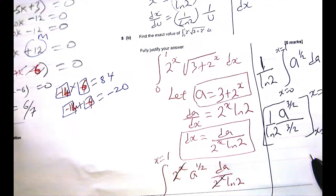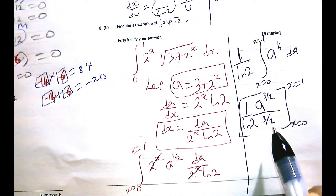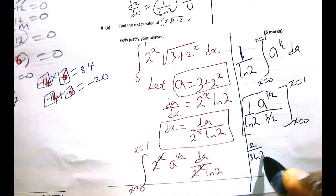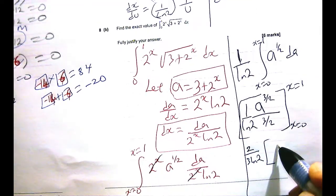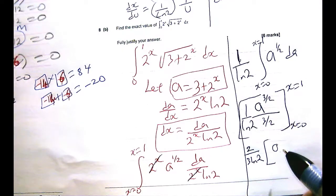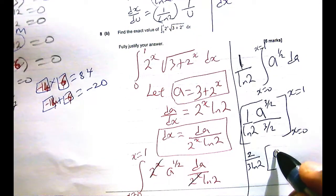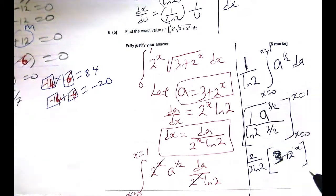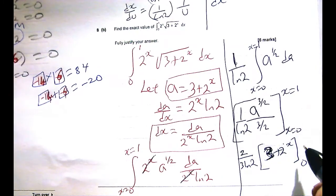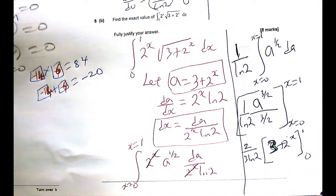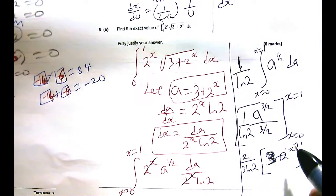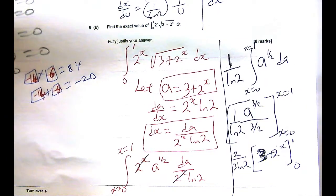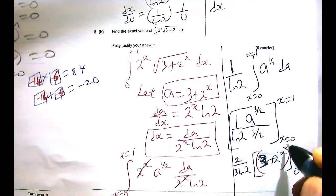We will take everything to normal, you know, to write everything normally now. So the 3 over 2 at the bottom becomes 2 over 3. So that's 2 over 3 lin 2. And you have A to the power 3 over 2. But A is root, is just 3 plus 2x. 3 plus 2 to the x. So from when x was 0 to when x was 1. Ah, sorry, I forgot to put my 3 over 2 power there. So there is still a power outside all that. 3 over 2.